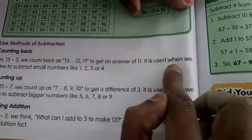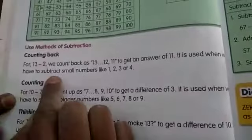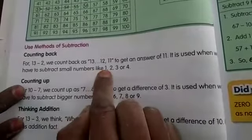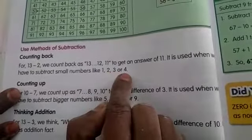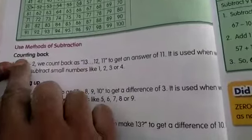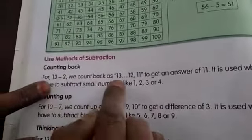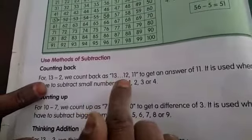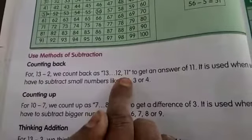It is used when we have to subtract smaller numbers like 1, 2, 3 or 4. What he told children here? Count back. So how many numbers we are counting here? 13, 12, 11.